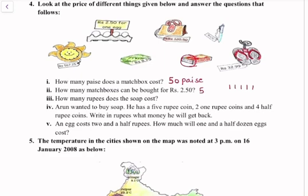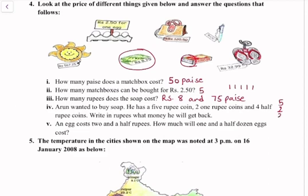How many rupees does the soap cost? The soap costs Rs 8.75. Arun wanted to buy soap. He has a 5 rupee coin, two 1 rupee coins (that is 2 rupees), and four half rupee coins (that is 2 rupees). So he has a total of 9 rupees. We need to find what money he will get back, so we subtract 8.75 from 9.00.